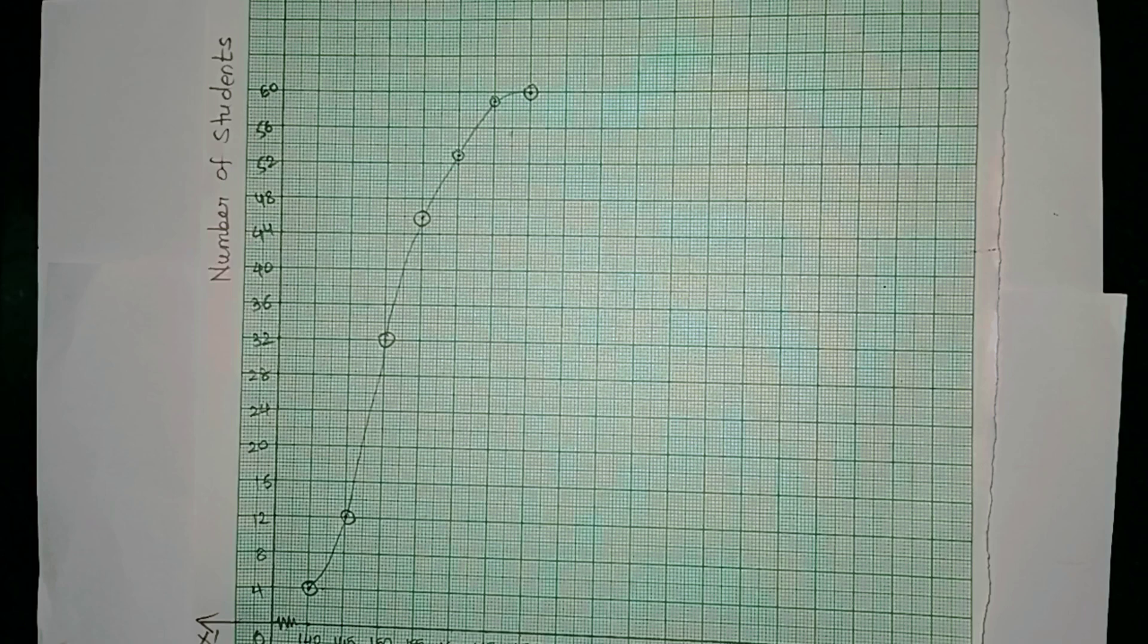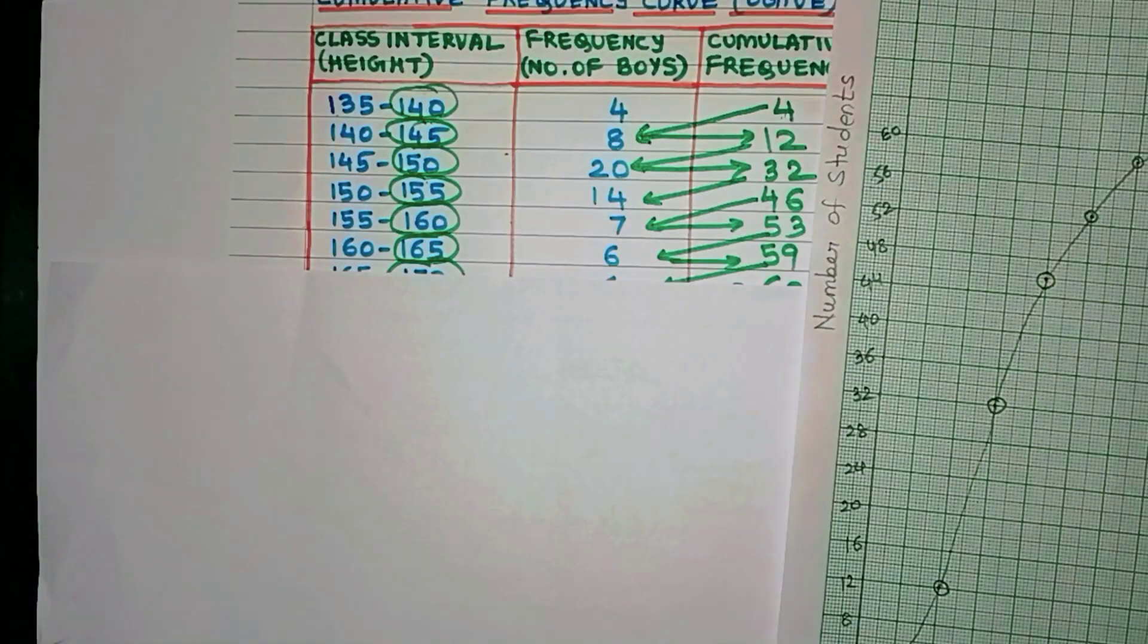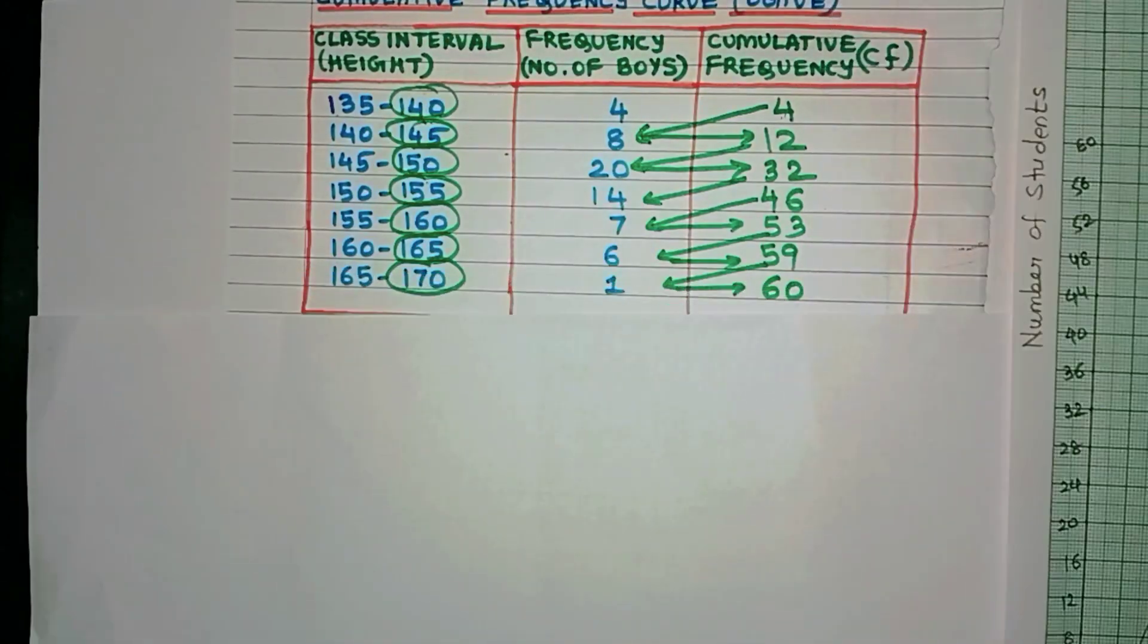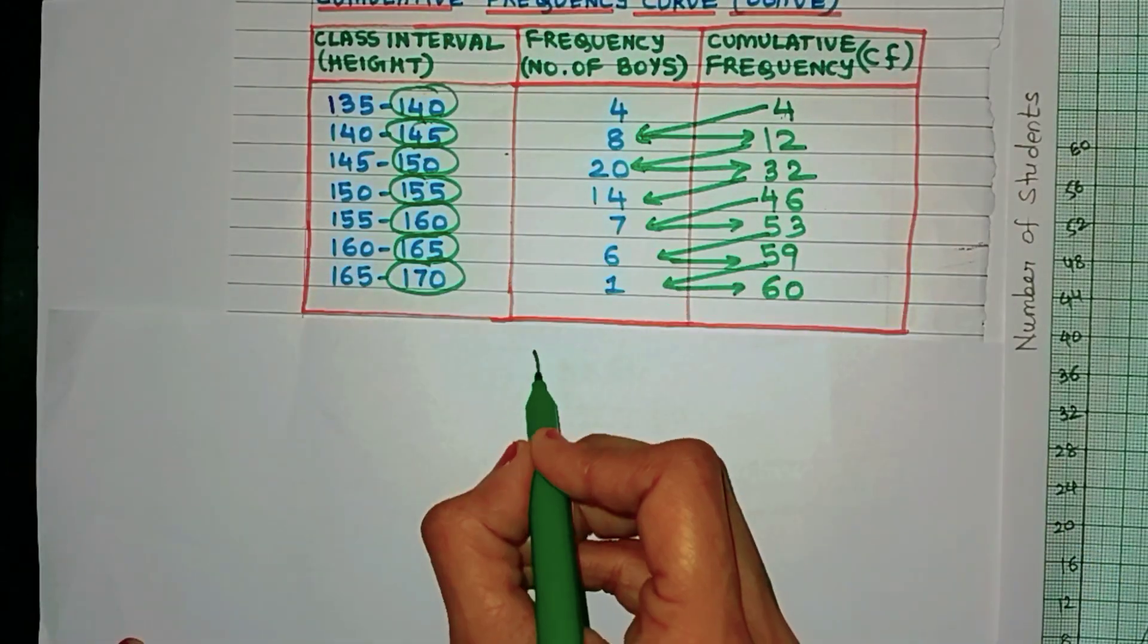Make sure you use a sharp pointed pencil so that the errors are minimized. So here I have a freehand curve. This is the cumulative frequency curve. Now how do we calculate the median from this curve?